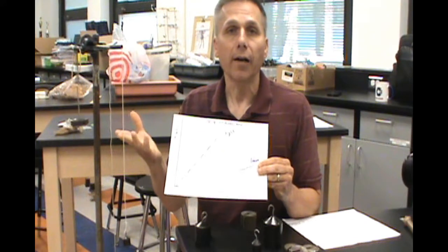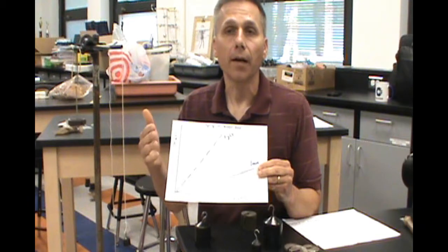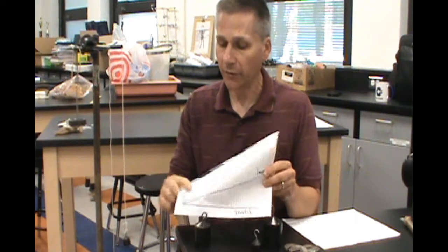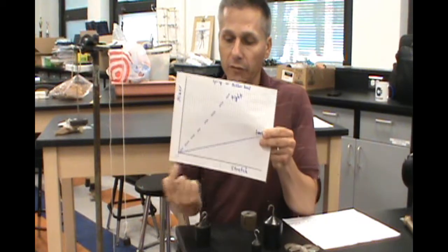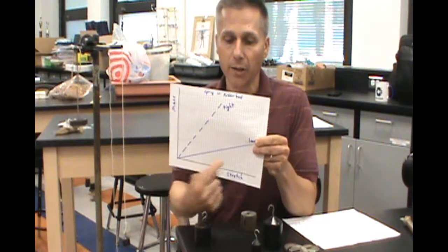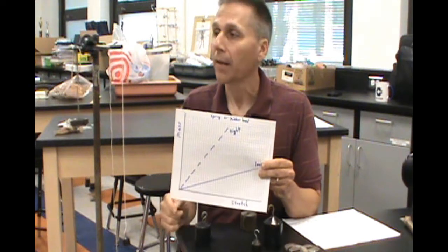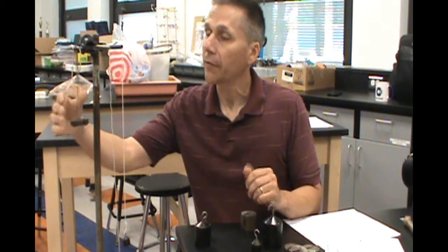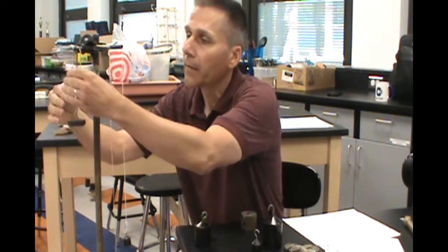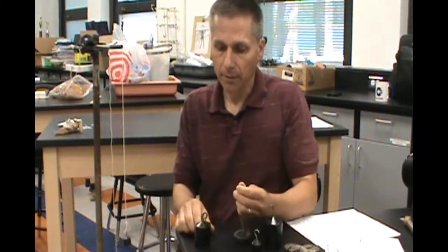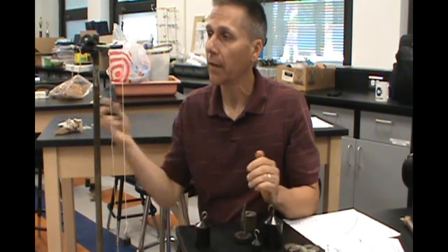Some springs are very loose, others are tight. If this axis is mass and this is the amount of stretch, a shallow line would represent a loose spring and a steep line would represent a tight spring. What's interesting is that if you don't have springs, this can be replaced by just a plain old rubber band — anything elastic like that.